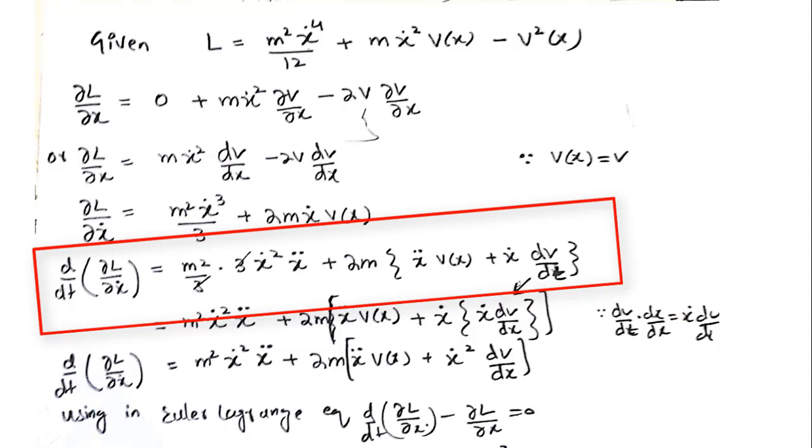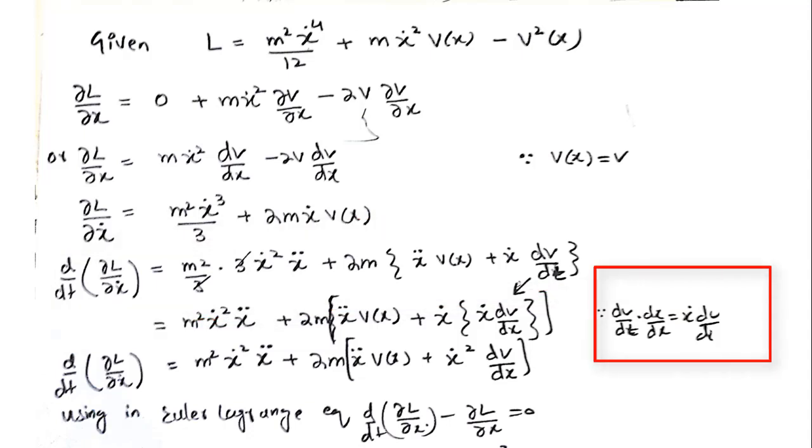From the second term I can differentiate it using the product rule. This becomes 2m times the derivative of first, that is x double dot, and second as it is, then plus first as it is and the derivative of second term which is dv by dt.